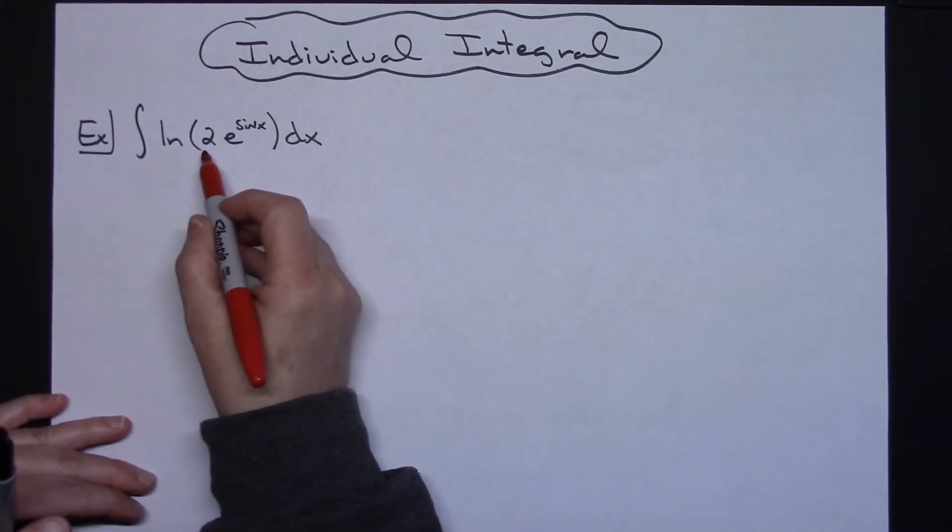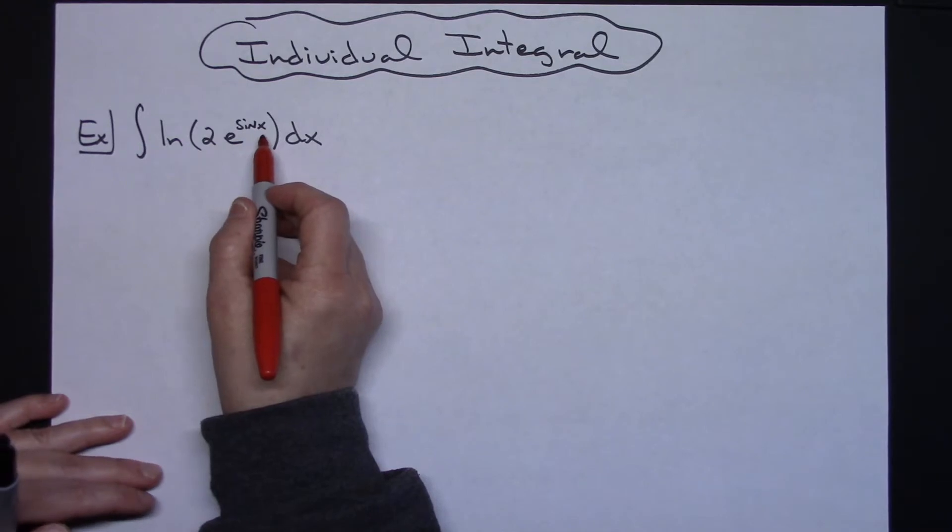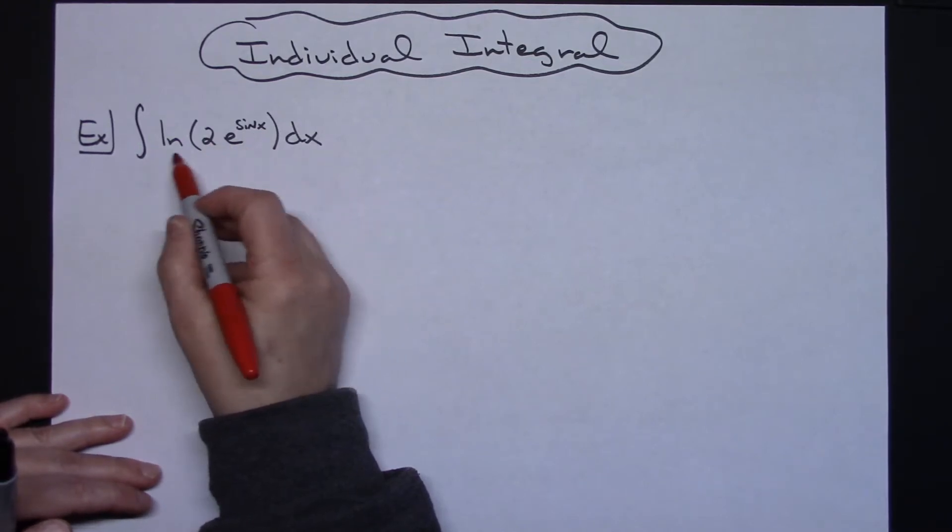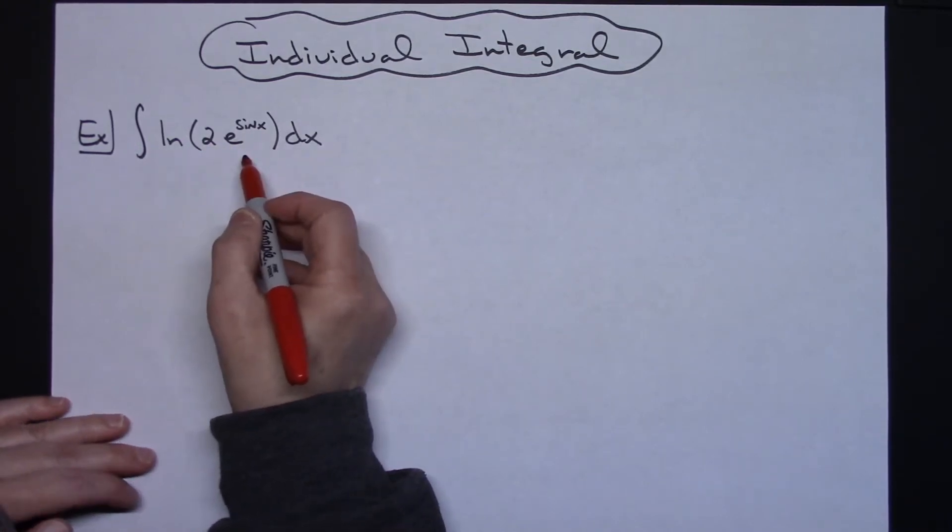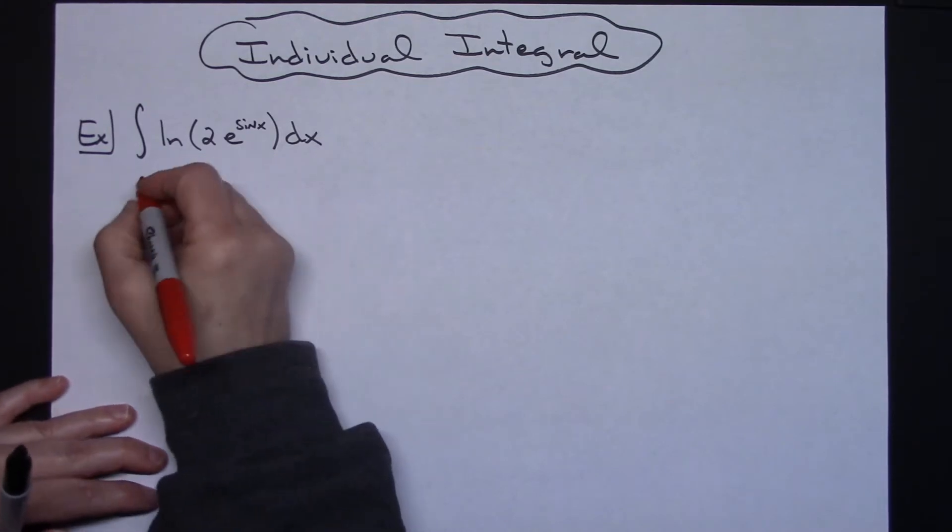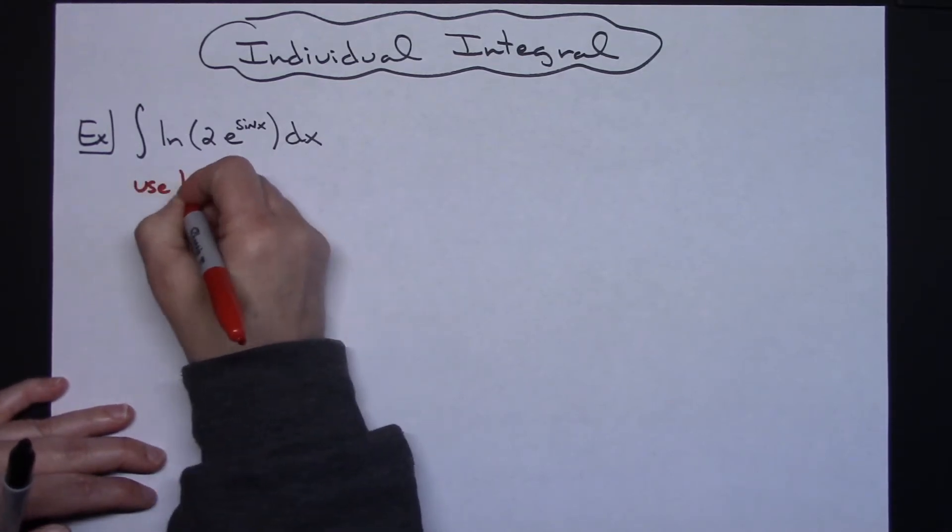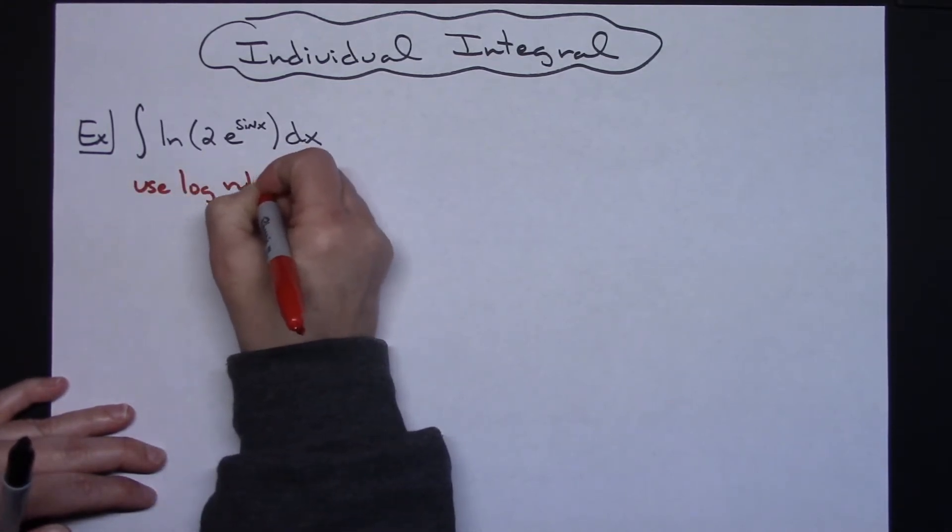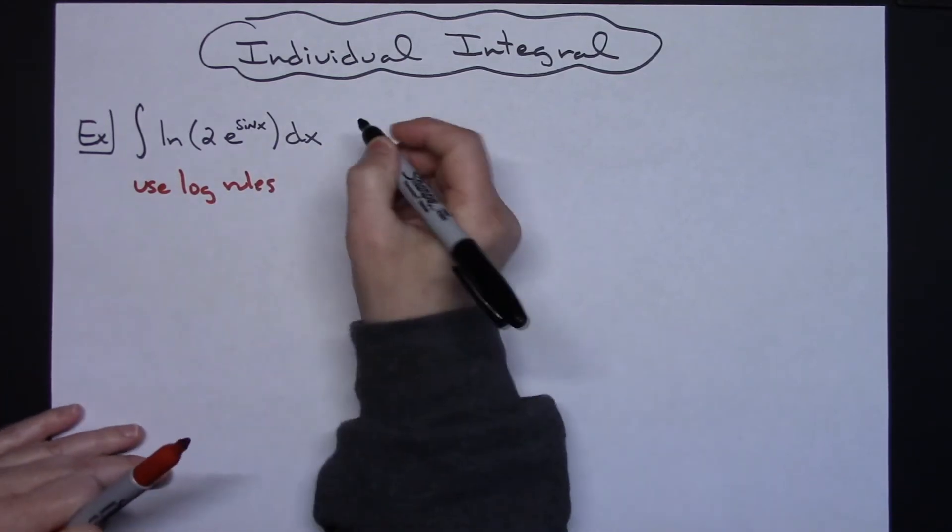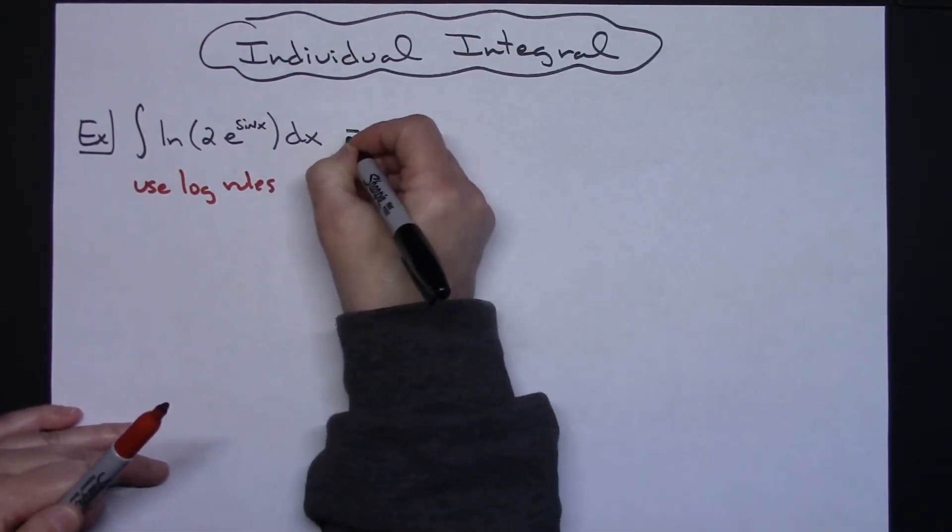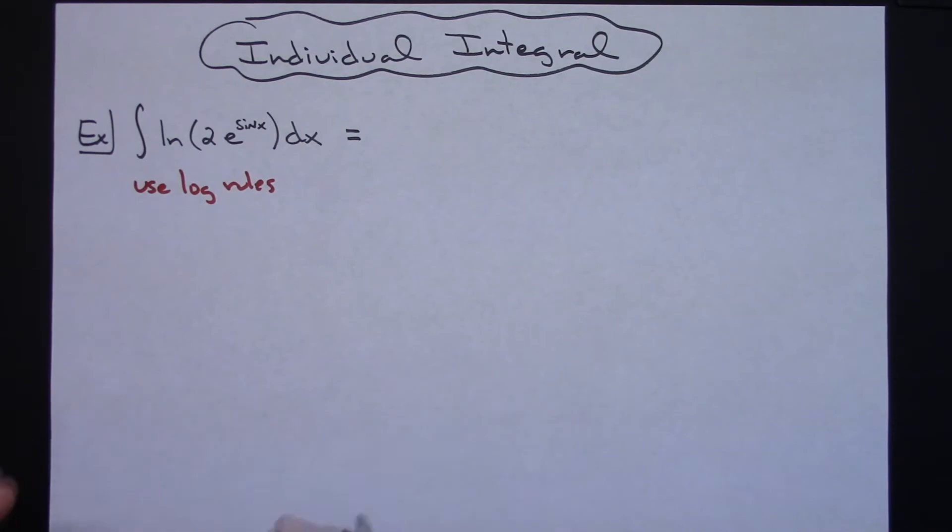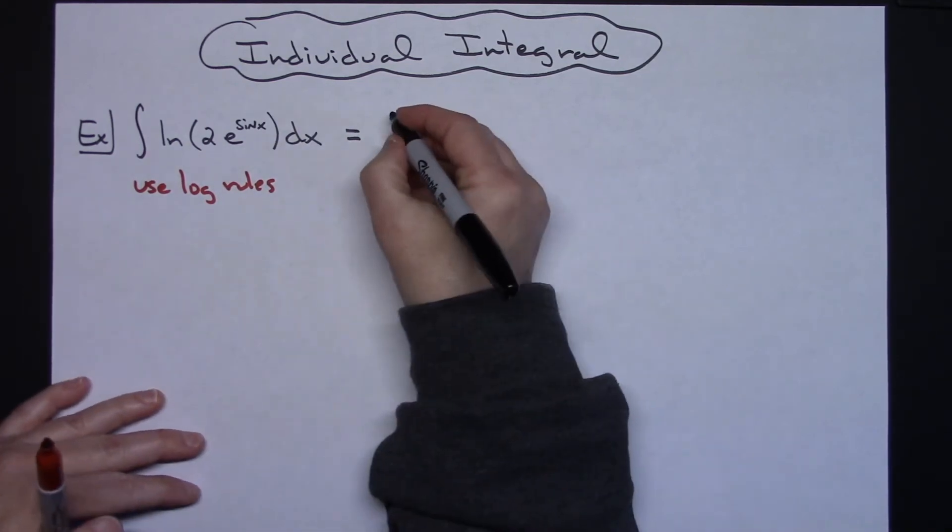Right here we've got the log of 2 times e raised to the sine x. I've got a multiplication here. I can expand this function with my log rules. So I'm going to write down here use log rules. That's what we're going to want to do. We're going to expand that log function, and then we'll be able to integrate as separate integrals.